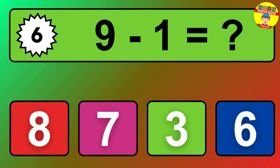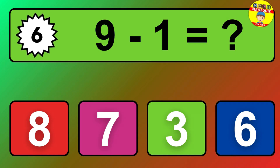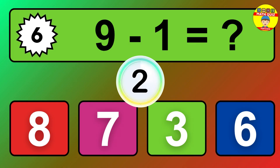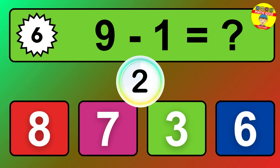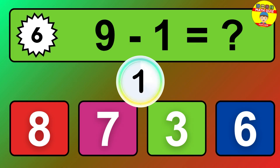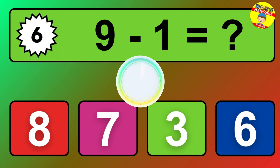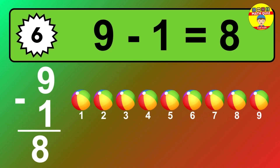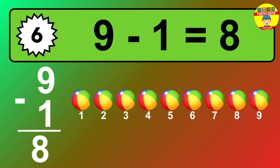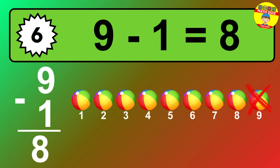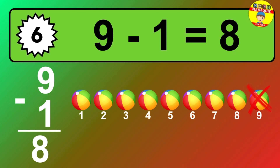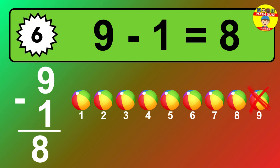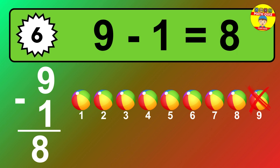Question six: nine minus one equals what? So the answer is nine minus one is eight. Let's count it: one, two, three, four, five, six, seven, eight.